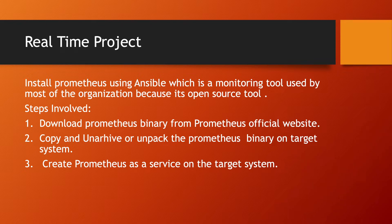Now what kind of steps are involved in doing this complete setup? The first step is we will be downloading the Prometheus binary from the official website of Prometheus. The second step will be copying that binary to the target system where we want to do the Prometheus setup. We will unarchive or unpack that binary on the target system, and the third and final step will be creating Prometheus as a service on the target system.